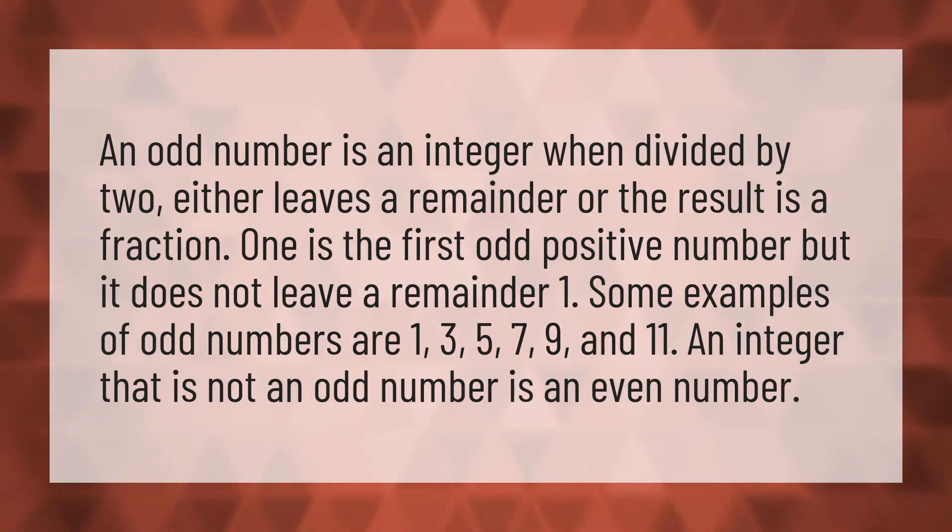An odd number is an integer when divided by two either leaves a remainder or the result is a fraction. One is the first odd positive number but it does not leave a remainder one.